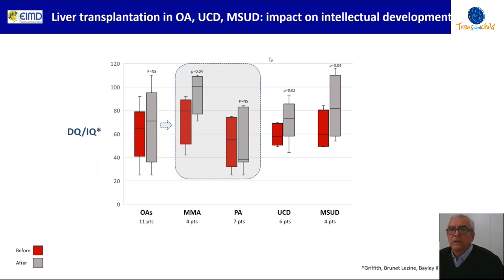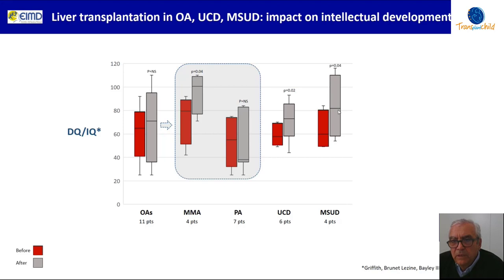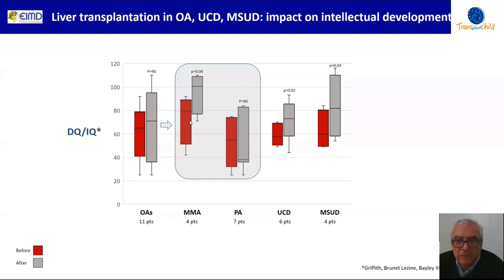Regarding the impact on intellectual development as measured by age-appropriate scales: overall, the DQ-IQ level improved — particularly significantly in urea cycle disorders and MSUD. However, in organic aciduria, comparing propionic and methylmalonic acidemia together, there was no significant improvement after transplantation. But when we split the two diseases, the improvement was clear and significant in methylmalonic acidemia, while in propionic acidemia there were no changes in intellectual development after transplantation — meaning propionic acidemia has a more severe neurological impact.